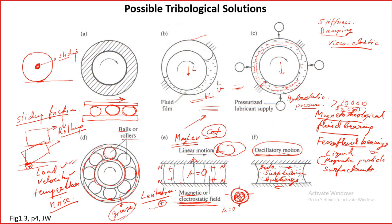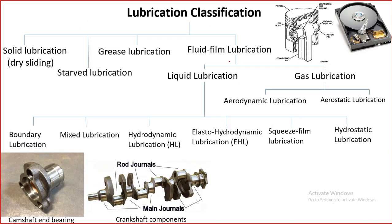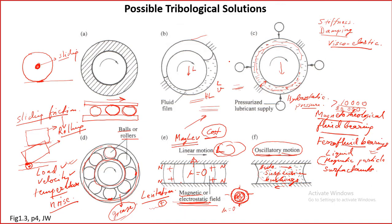These are the tribological solutions which we will be discussing in different forms. The basic thing is that they are applied to different situations — whatever situation you have, you must consider both the lubrication and the bearing material together. We cannot say we are only talking about lubrication or only about ball bearings. Under different situations we have to apply different solutions, so we need to know all types of tribological solutions and apply them accordingly.